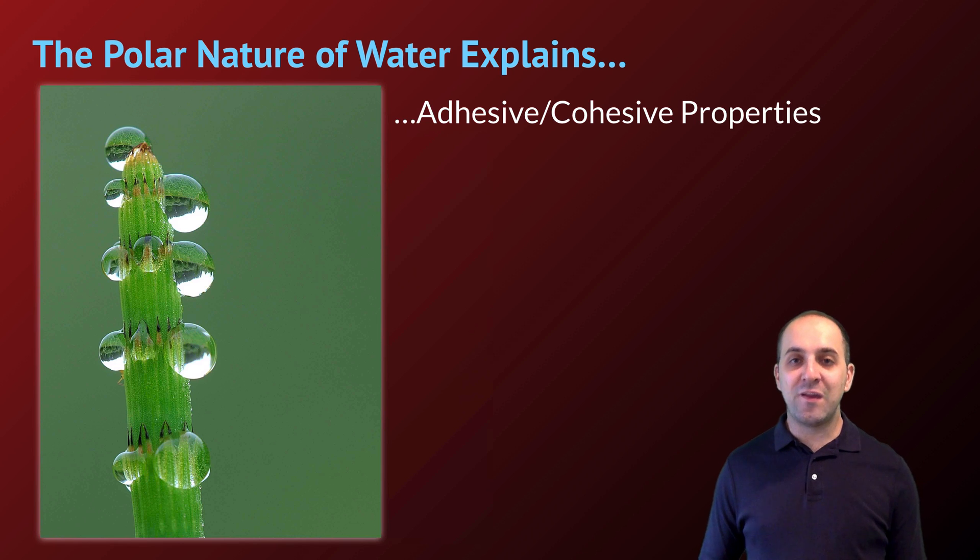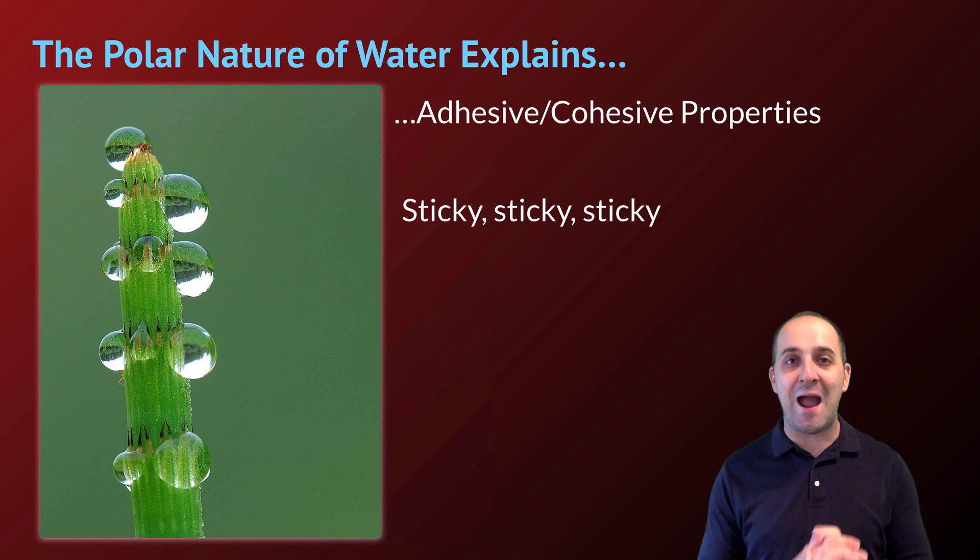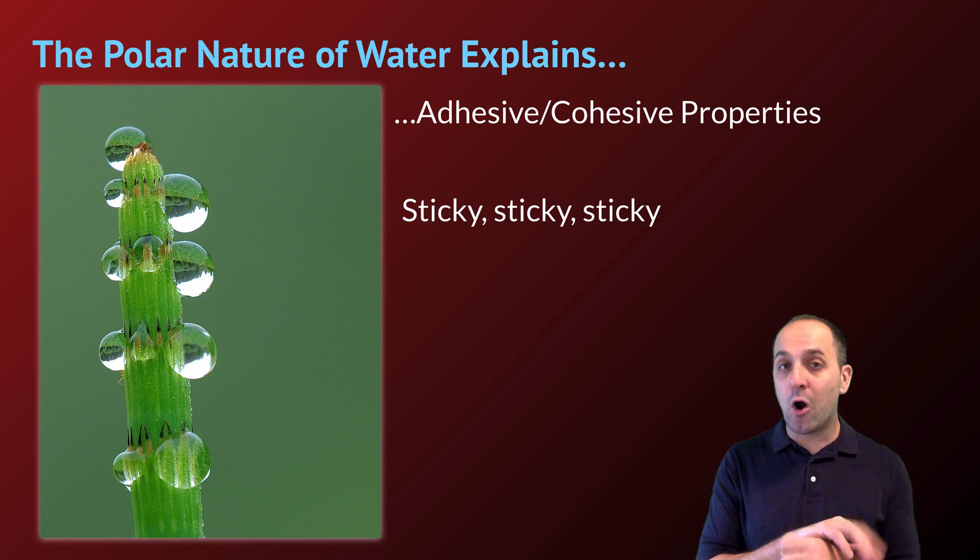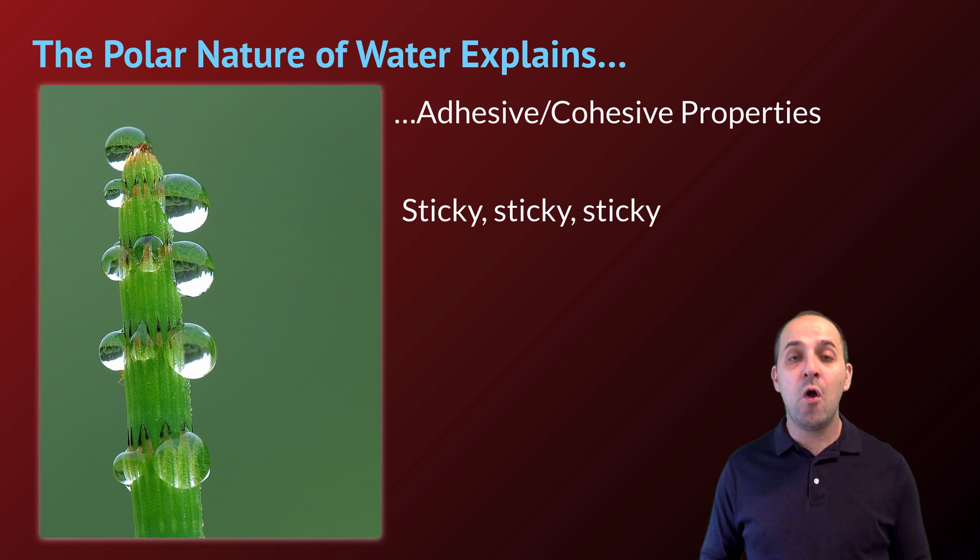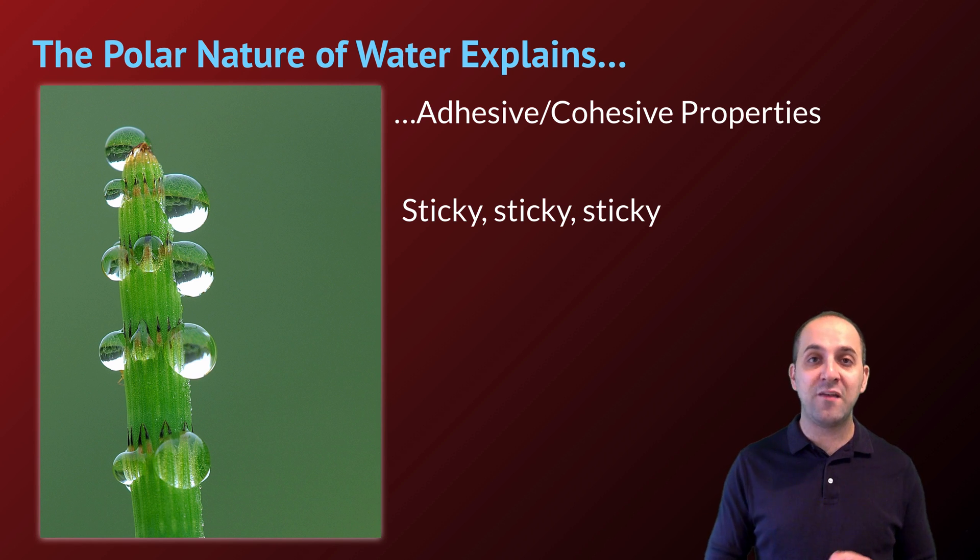The polar nature of water also explains water's adhesive and cohesive properties—water's general stickiness. Water is really good at sticking to other substances and to itself because of the polar nature of the molecules. Any substance with partial or full charges can adhere to water molecules. That's why water sticks to our bodies when we get out of the shower and why water sticks to the cell walls of transport vessels inside plants, which is useful for photosynthesis. Water is also good at sticking to itself—that's called cohesion—which is important in explaining capillary action, as one water molecule pulls other water molecules through a substance.